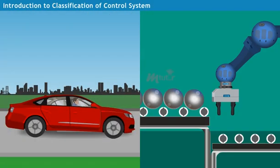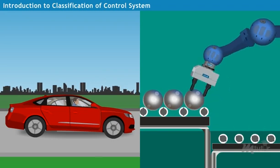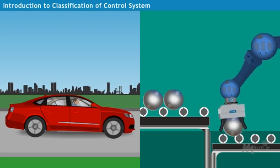In the previous topic, we have learned that the concept of control system plays a dynamic role in controlling the systems in order to achieve the desired output.